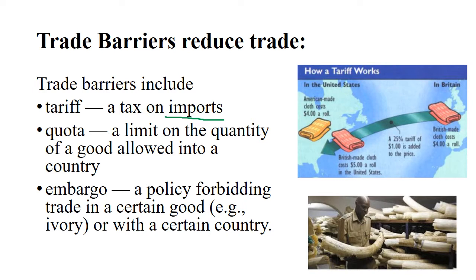The next category of trade barriers are quotas. Sometimes international products are allowed, but only up until a certain point — they limit the amount that can be brought into your country in a given year. That reduces the competition that American businesses will face.